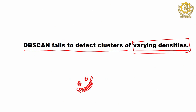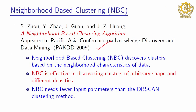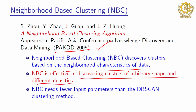Now we will talk about a clustering method which can find clusters even if the cluster densities vary heavily. That is something called NBC — the Neighborhood Based Clustering approach. This clustering approach was introduced at PAKDD, a top-tier data mining conference. NBC discovers clusters based on the neighborhood characteristics of the data. NBC is effective in discovering clusters of arbitrary shape and different densities. NBC needs fewer input parameters than DB scan — only one parameter instead of two (epsilon and minimum point).